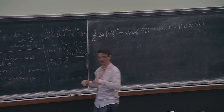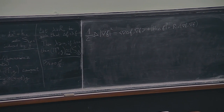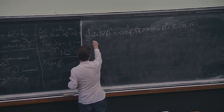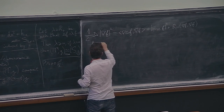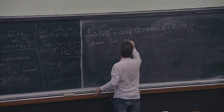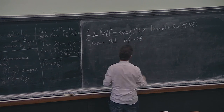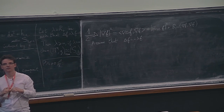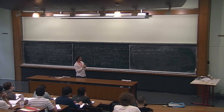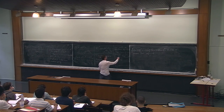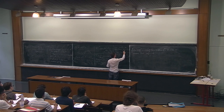We assume Δf = −λf and will try to say something about λ — where f is not identically zero, or rather not constant on a compact manifold without boundary. We integrate the Bochner formula over M with respect to the Riemannian measure. Since we're on a compact manifold, integrating a Laplacian gives zero.